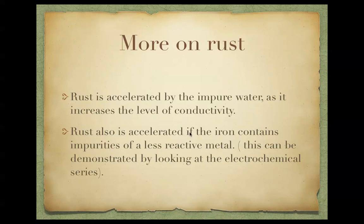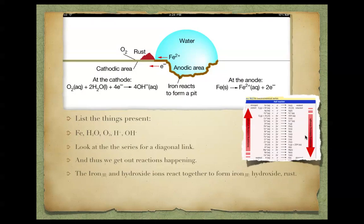Rust is also accelerated by iron that contains impurities which are less reactive. And you can look at the electrochemical series and explain why this is. If you go back to the electrochemical series, if we have water here and iron, if we have things that are less reactive, it means we're going to have less iron there, but the iron that is there is going to react quicker.